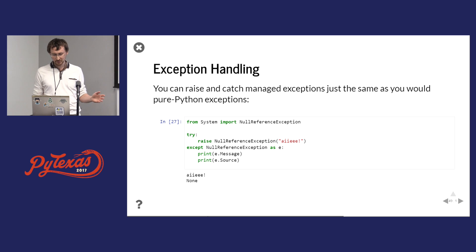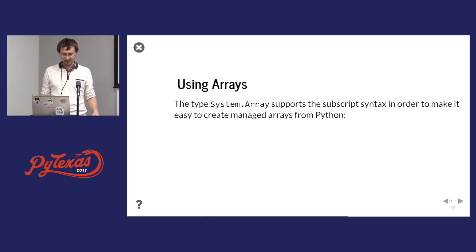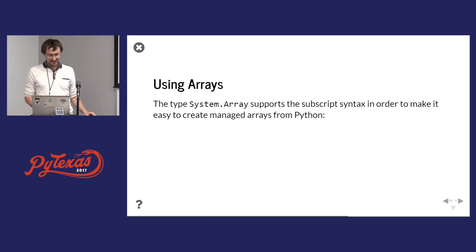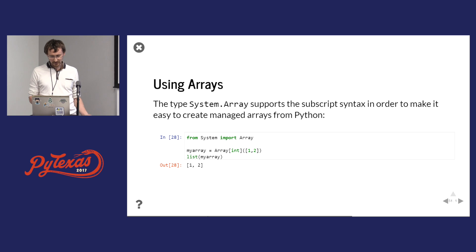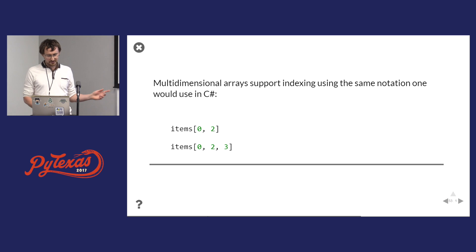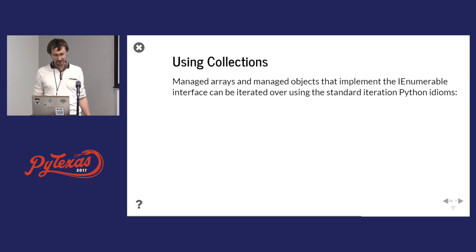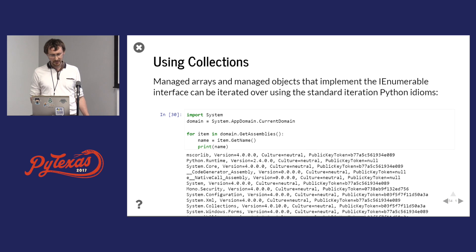We have very good hooks into exception handling — you can catch .NET exceptions from Python and vice versa. For arrays, you can use .NET arrays with Python indexing syntax. Multidimensional arrays in C# are more like NumPy arrays.